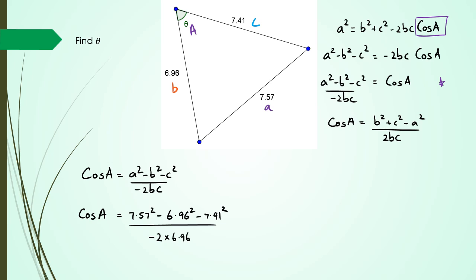Which gives cos A = 0.44, and A = cos⁻¹(0.44). So theta, which is my angle A, is going to equal 63.48 degrees.